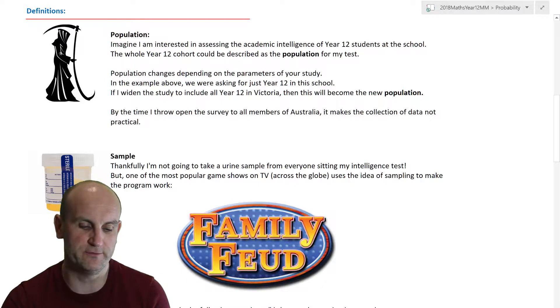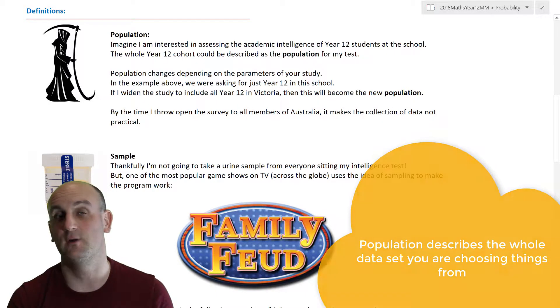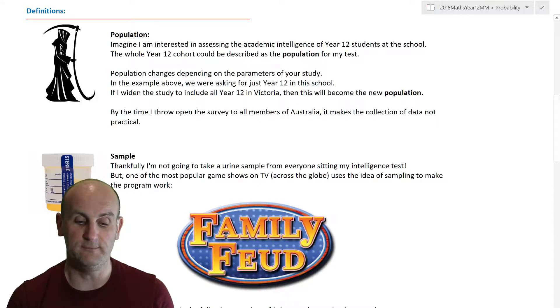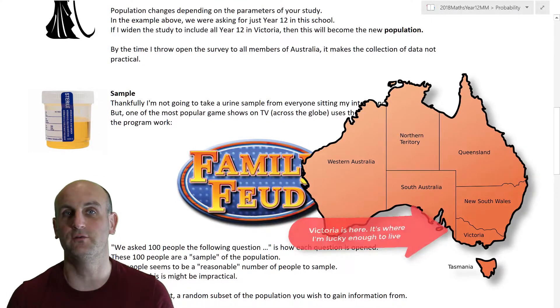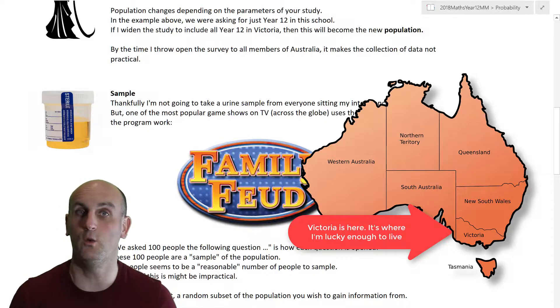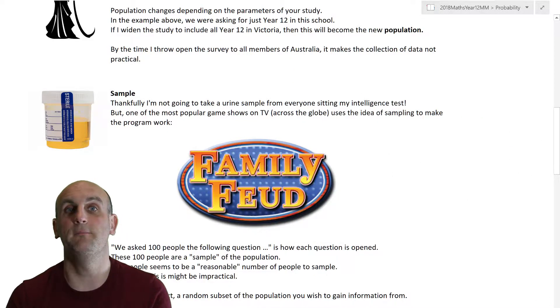So I'm going to start with some simple definitions. Number one, a population. Now the great thing about population is it's static. Once you've chosen a population, then it stays that way for the whole question. So for example, if I'm interested in looking at the academic intelligence of year 12 at my school, then that's great because my population is the year 12 at my school. That's it. It's not going to be bigger, it's not going to be smaller for the point in time that I actually do my survey or my statistics. That is my population. But it could also be the population of the year 12 in the whole of Victoria, the population of year 12 in the whole world, or just the year 12s in my mental group. Each of these are defined as a population. So the population can change, but once you've chosen what your population is, then all is good.